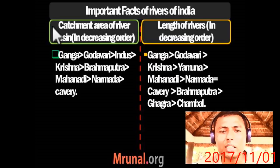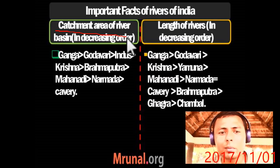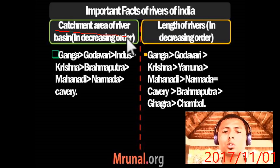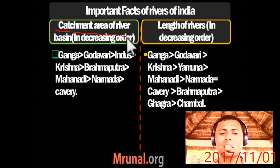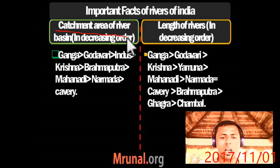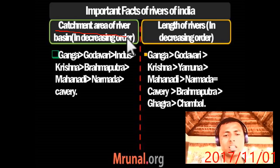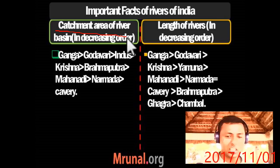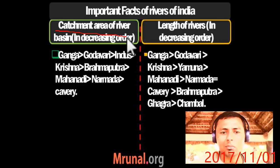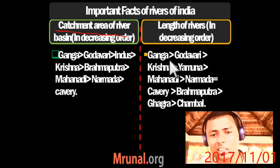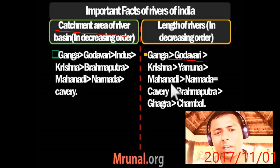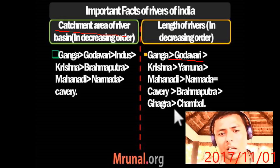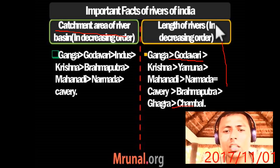Important facts about the Indian river system: catchment area in decreasing order — Ganga (maximum), Godavari, Indus, Krishna, Brahmaputra, Mahanadi, Narmada, and Kaveri. Length-wise in India in decreasing order — Ganga (maximum), Godavari, Krishna, Yamuna, Mahanadi, Narmada and Kaveri (equal), then Brahmaputra, Ghaghara, and Chambal.